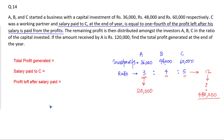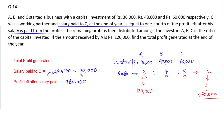After paying salary to C, the profit left is 4,80,000. Now, how much salary is paid to C? The salary paid to C is one-fourth of the profit left after its salary is paid — so one-fourth of 4,80,000 — this amount paid to C as salary is 1,20,000. So salary paid to C is 1,20,000.